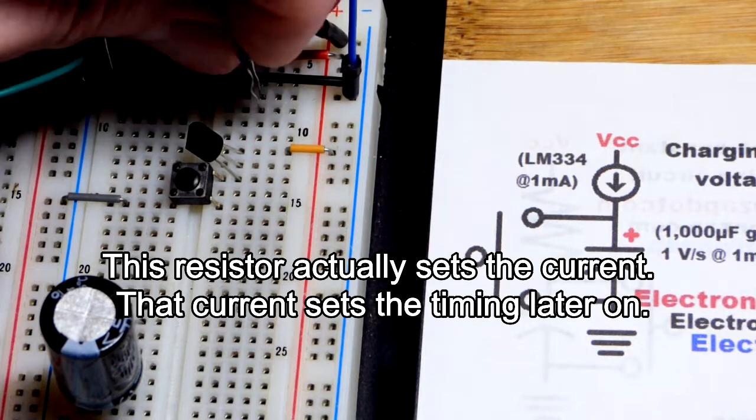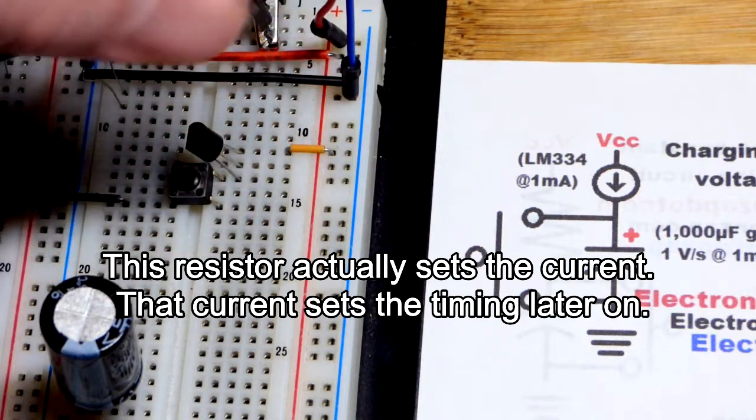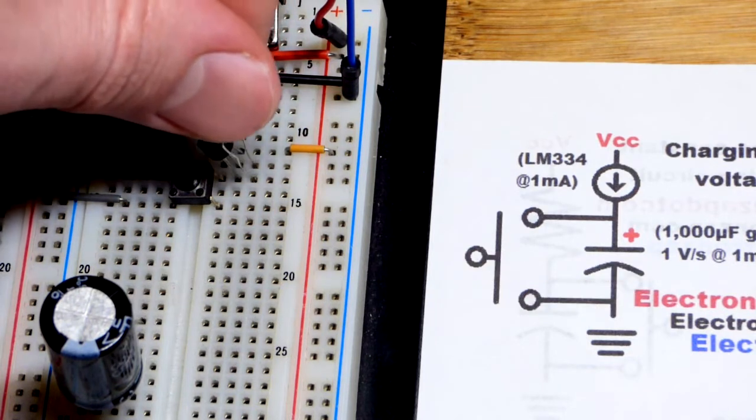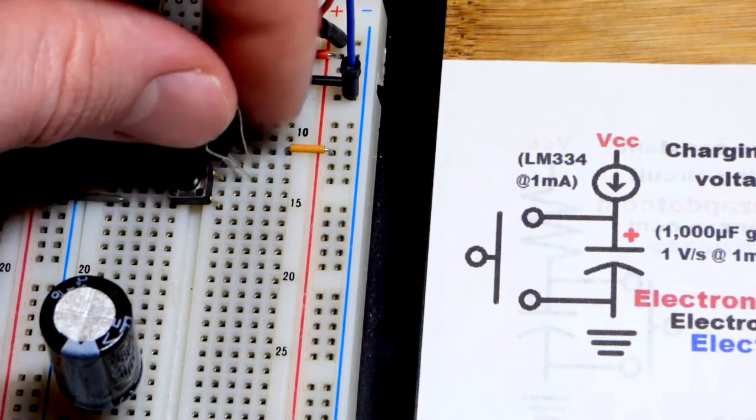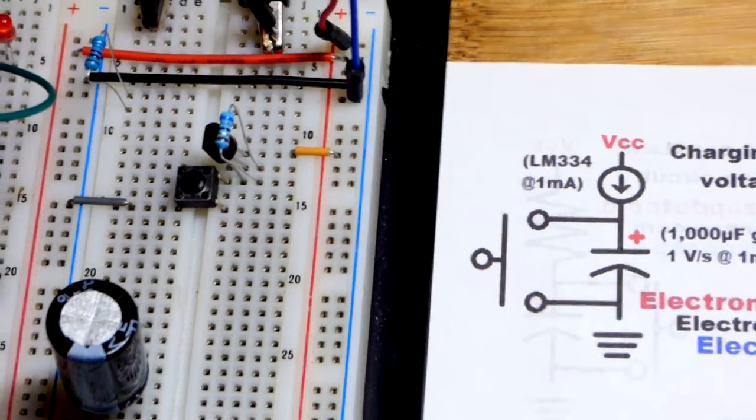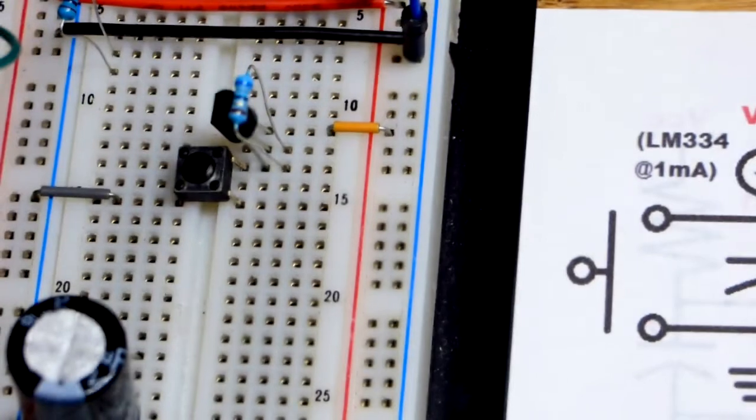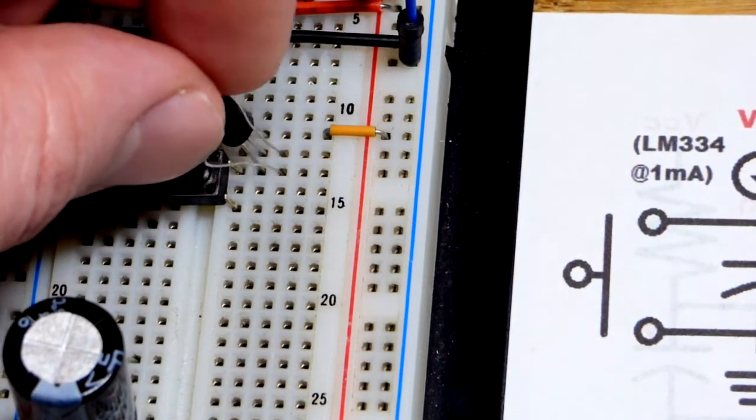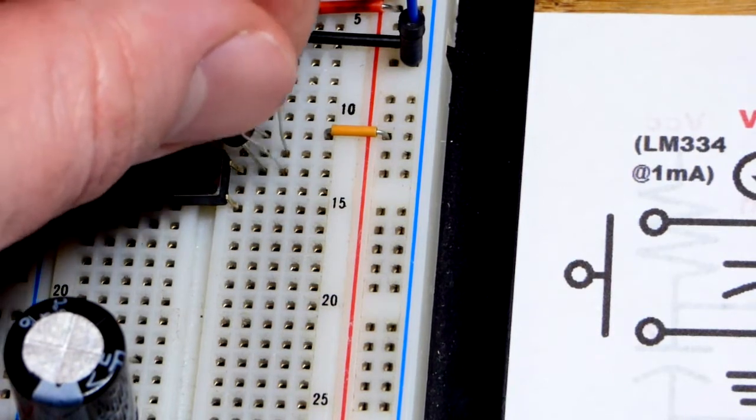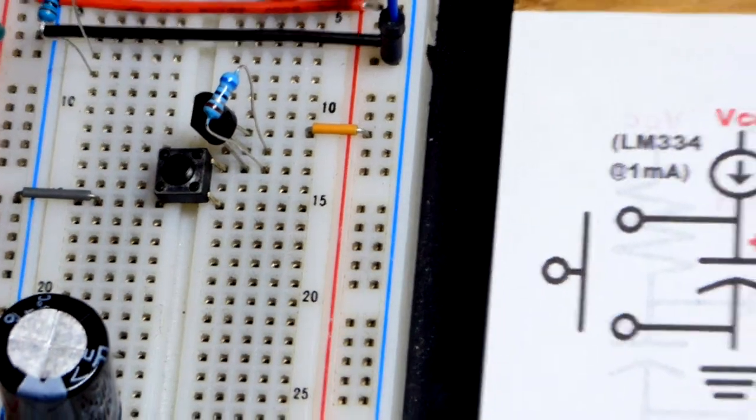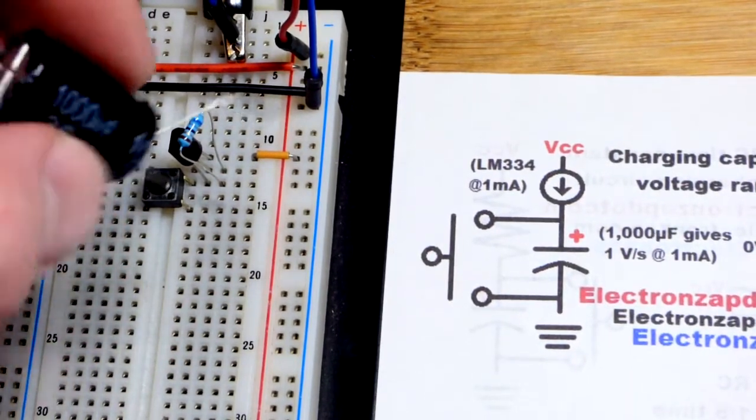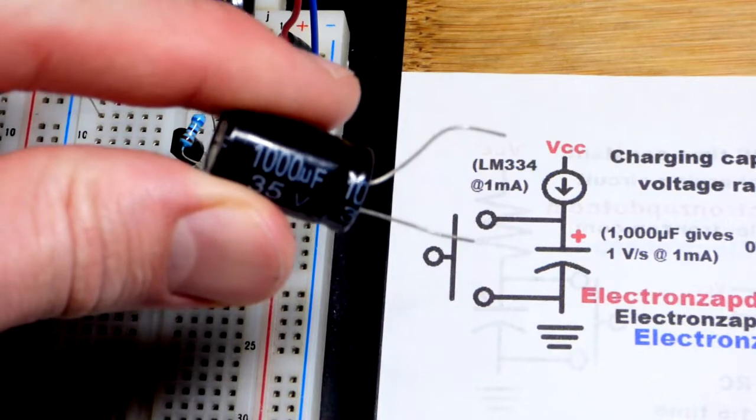The timing will be set by this 68 ohm resistor. And so that gives us a pretty spot on one milliamp of current, as we saw there. So it's going to be the middle pin. I didn't zoom in close enough in the last video, and that time I zoomed in too close. There we go. It doesn't stay focused if you zoom in too close. So there we go, the middle pin, that's R, and then the V-minus pin down there. That's what actually sets the current, is the resistor, based on the component's properties.